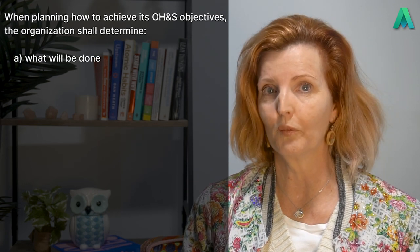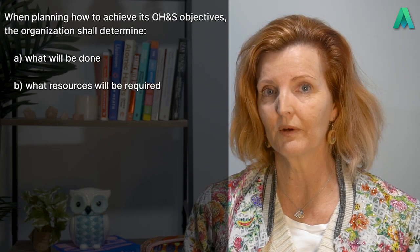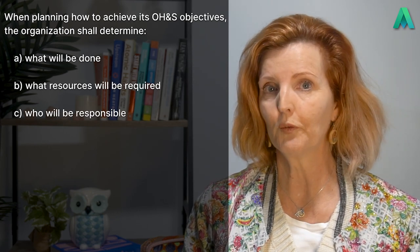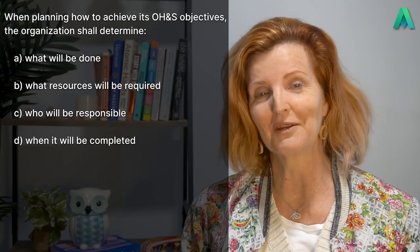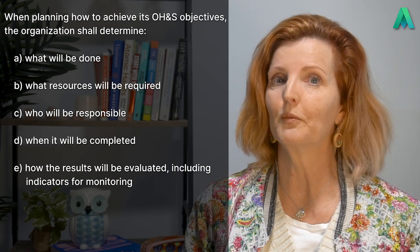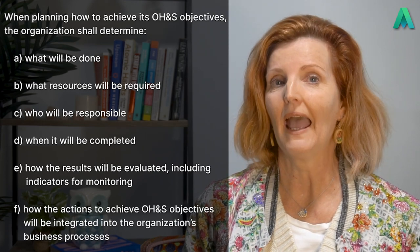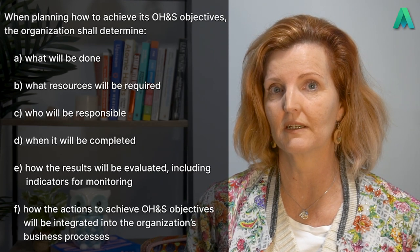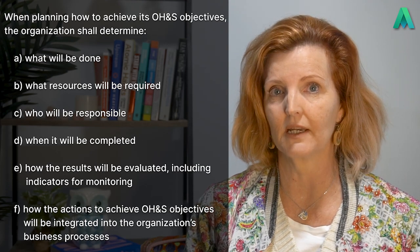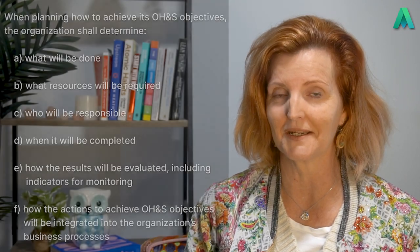Now we can move to sub-clause 6.2.2, planning to achieve OH&S objectives. This sub-clause states that when planning how to achieve its OH&S objectives, the organisation shall determine: A — what will be done; B — what resources will be required; C — who will be responsible; D — when it will be completed; E — how the results will be evaluated, including indicators for monitoring; and F — how the actions to achieve OH&S objectives will be integrated into the organisation's business processes.